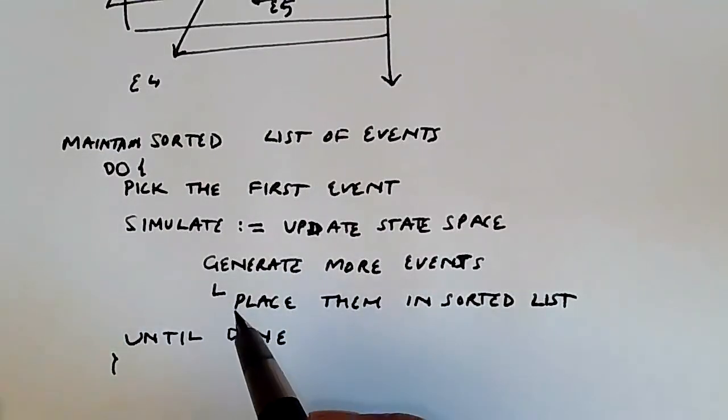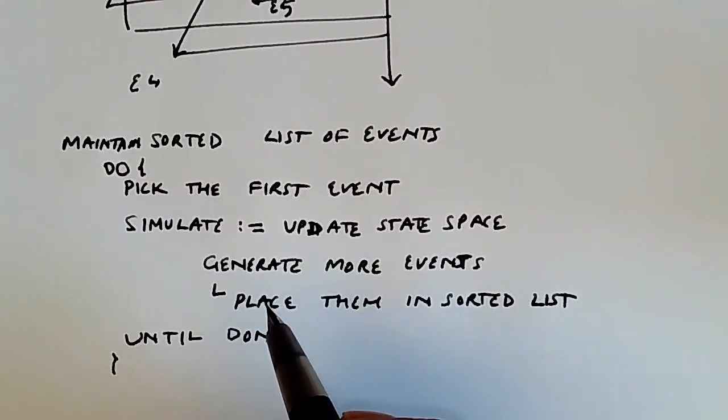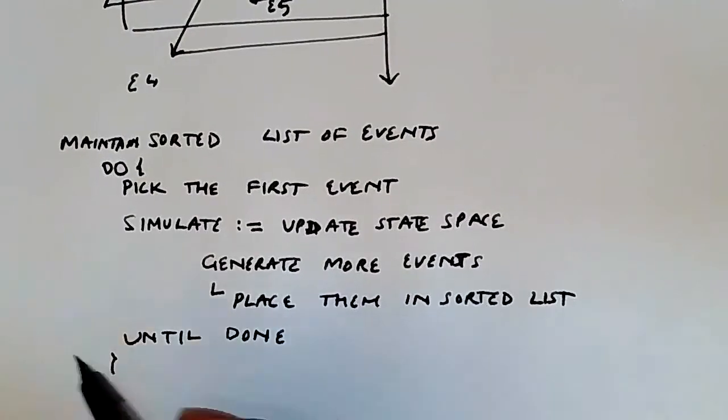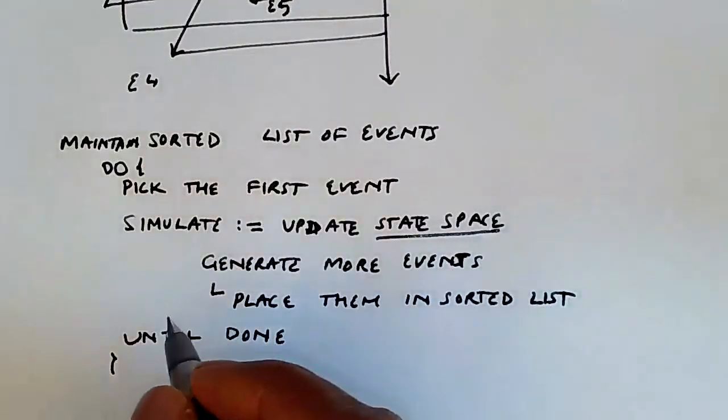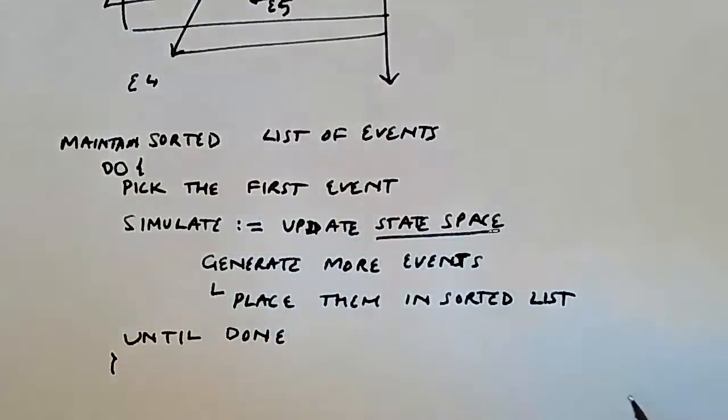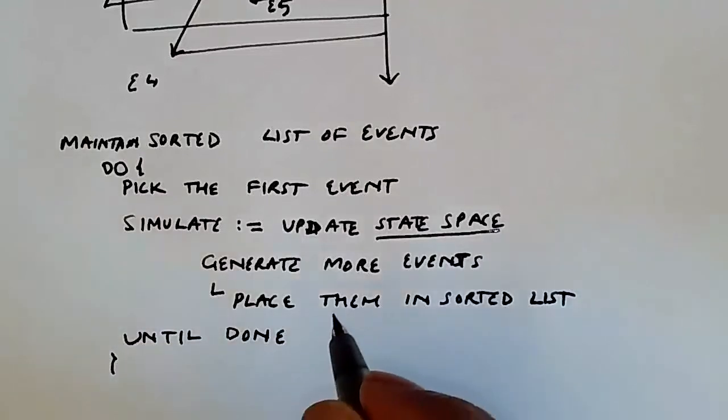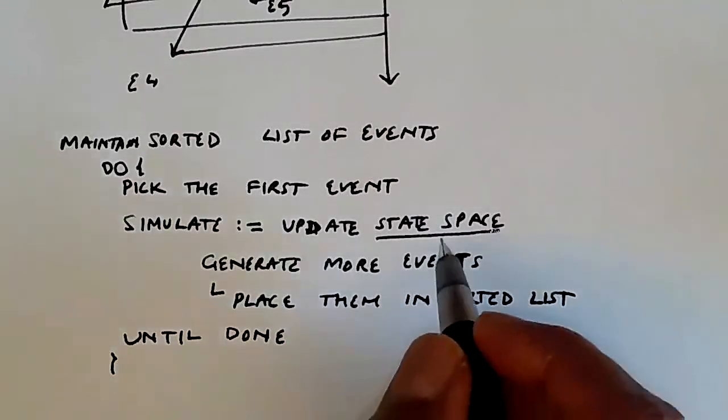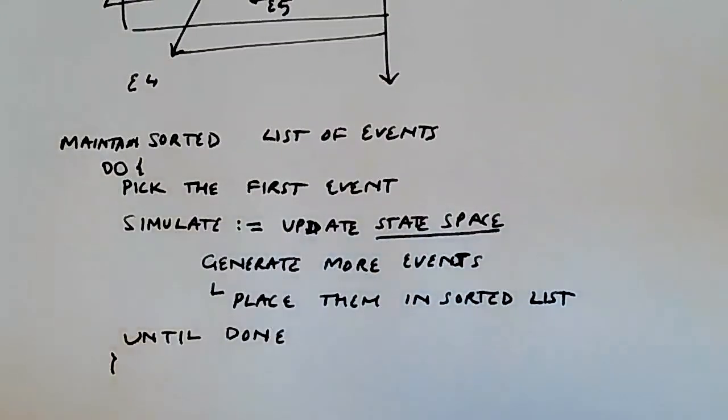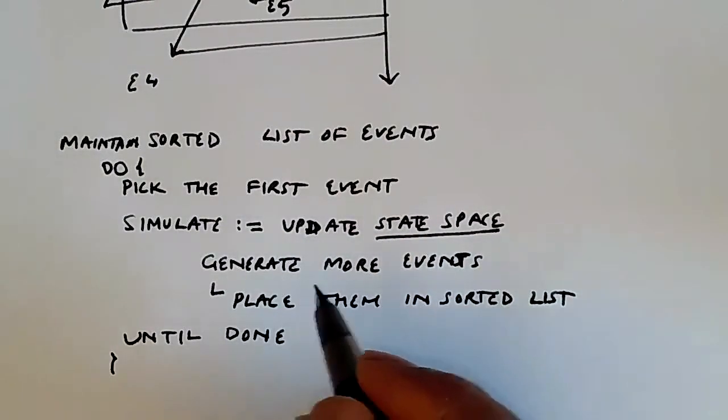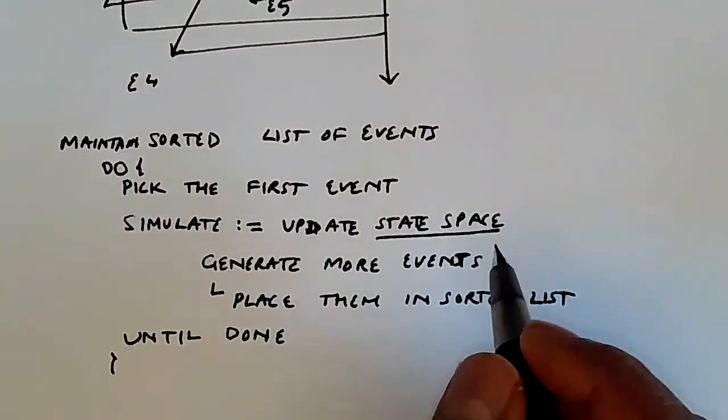And essentially, all discrete event simulators are going to be implementing some version of this basic loop. Now, the things to watch out for is that the simulation of the event is going to update the state space, and we're going to therefore reflect the updated state space in the future events. And so the interaction between the different events is through the globals, which in fact is the state space.